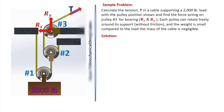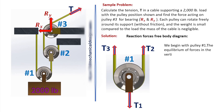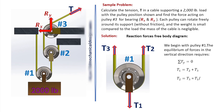Solution. Reaction Forces Free Body Diagram. We begin with pulley number 1. The equilibrium of forces in the vertical direction requires: sum of forces Y equals 0. T1 equals T2 plus T3. T2 equals T3 equals T1 divided by 2, equals 1,000 pounds.